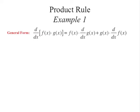Next we look at the product rule. If you're asked to differentiate something multiplied by something else — f of x times g of x — it equals f of x times the derivative of g of x, plus g of x times the derivative of f of x. You can remember this as: first times derivative of the second, plus second times derivative of the first.